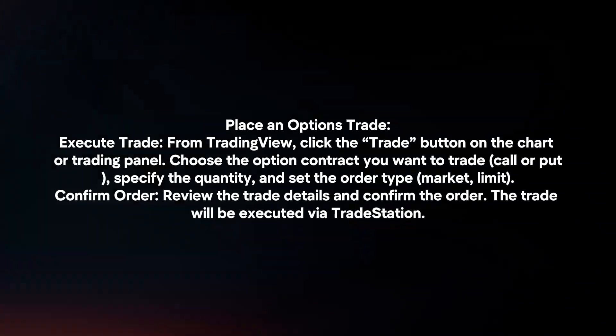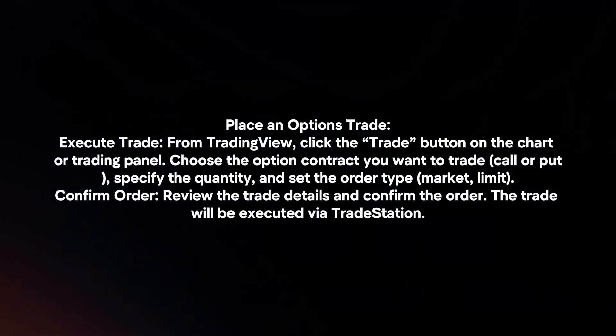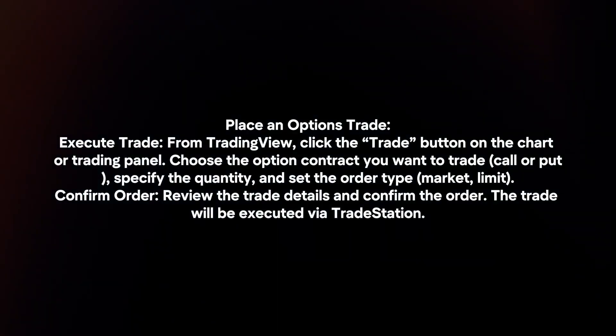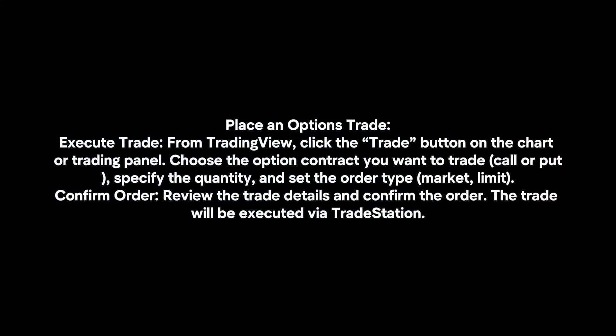To place an options trade, click the trade button on the chart or trading panel from within TrainingVue. Choose the option contract you want to trade, specify the quantity, and set the order type. Review the trade details and confirm the order — the trade will be executed via TradeStation.